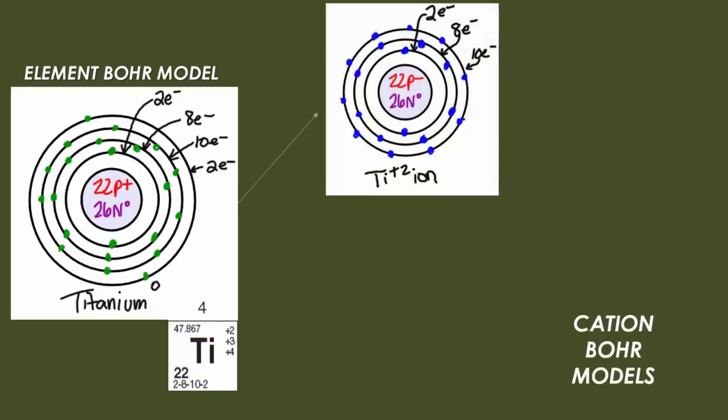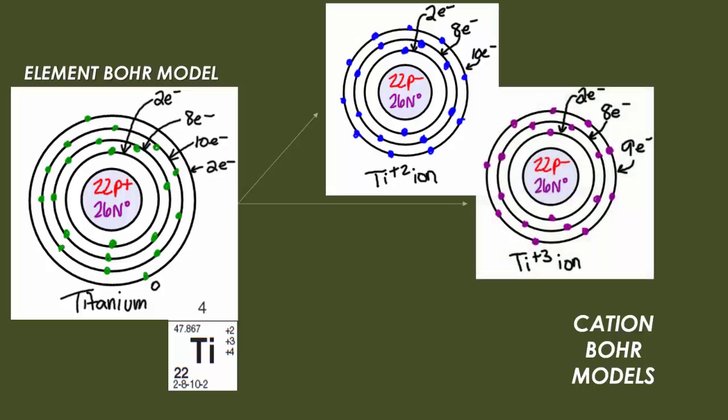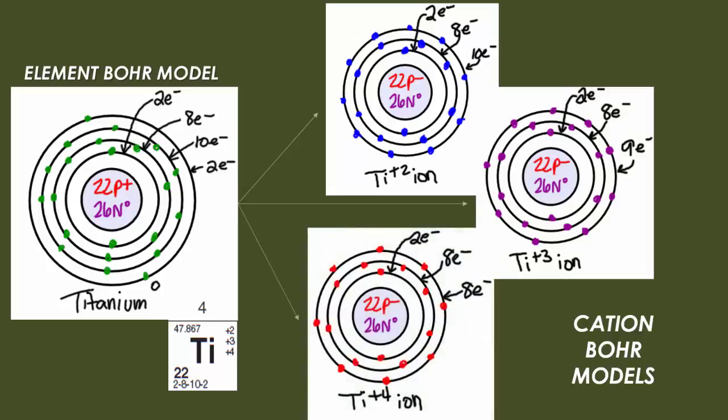Now, if you were to draw the titanium plus 2 ion, you're noticing that it's slightly smaller in size. It only has 3 rings, and there are no more 2 electrons in the outermost level. If you have a titanium plus 3, not only do you still have 3 rings, but you don't have 10 electrons on the outermost level, you only have 9. And likewise with titanium plus 4, you drop from 9 electrons in the outermost level to only 8.